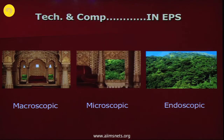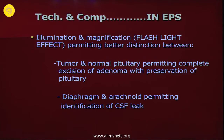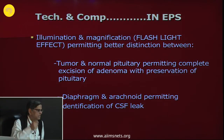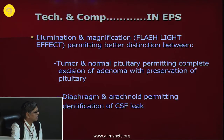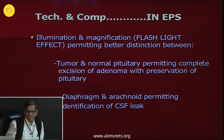To illustrate the difference: the view on the most left is by gross vision or headlight; next is with the microscope showing enlarged detail; the last is like putting your neck into a window and looking all around — that is the endoscope. Illumination and magnification of the endoscope is unique — it gives a flashlight effect, meaning if you take the endoscope close to the target you can see finer details. It permits better distinction between tumor and normal pituitary and similarly between the arachnoid and diaphragm, so you can identify even minor CSF leaks.